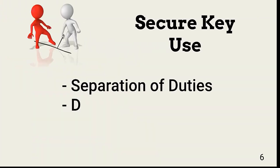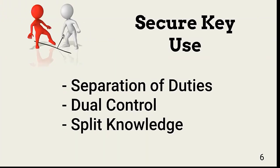In addition to secure storage, highly classified information may also need a more secure way to use the keys. Three approaches include separation of duties, dual control, and split knowledge. These aren't strictly related to encryption — they are access controls that support encryption and key management efforts.